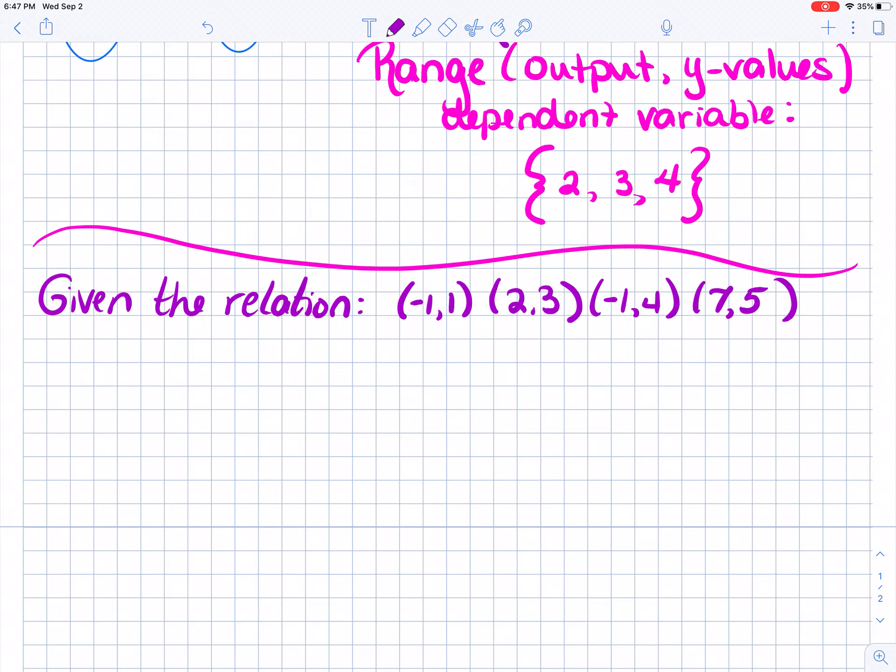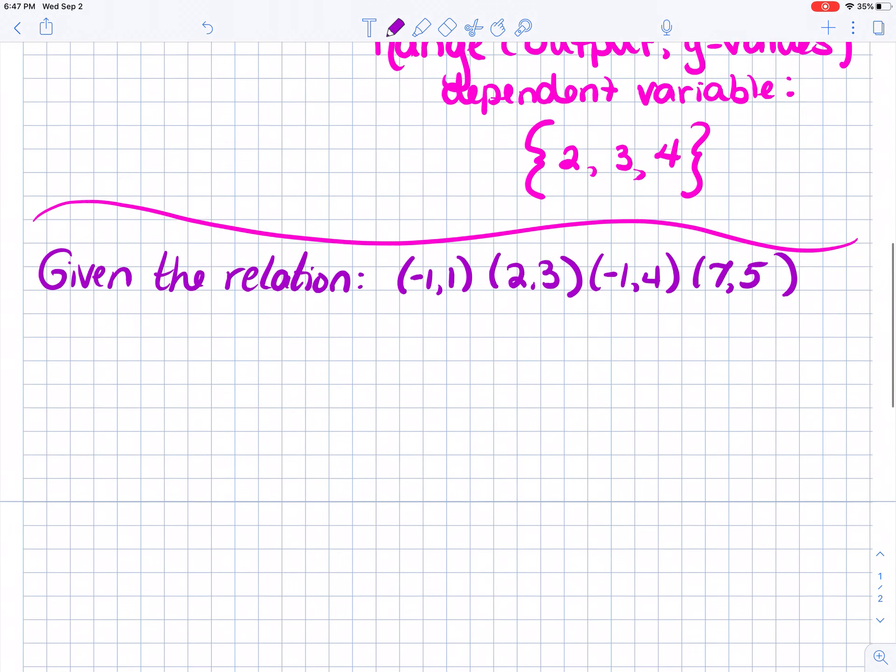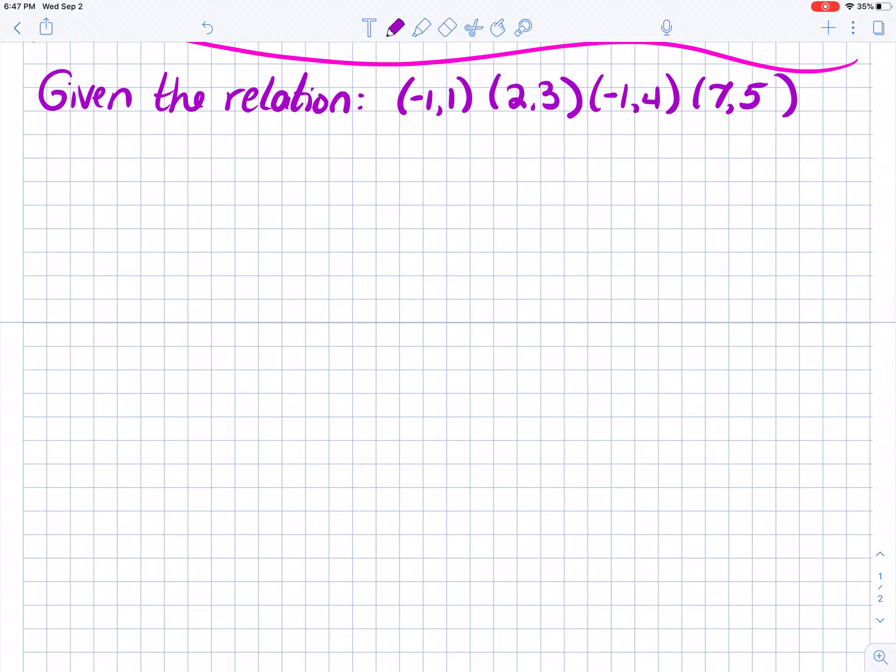I'm going to do one more representation of this relation. Let's do a table. You could do horizontal or vertical. So I'm going to put an X and a Y. And again, the order here doesn't matter. What matters is that they're next to their partners. So, negative 1, 1, 2, 3, negative 1, 4, 7, 5. That's pretty easy.